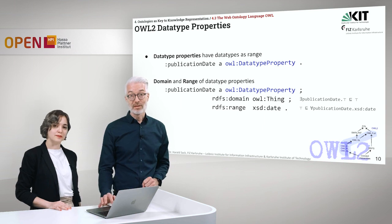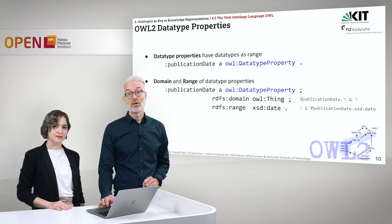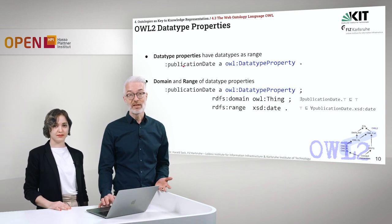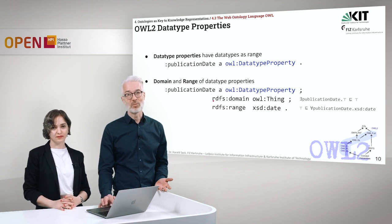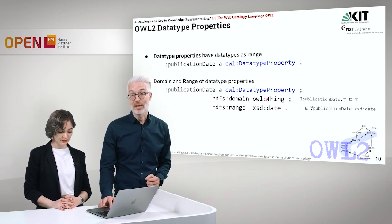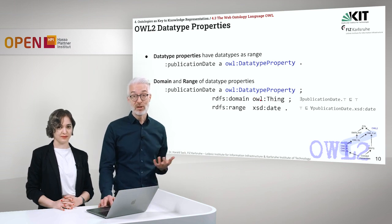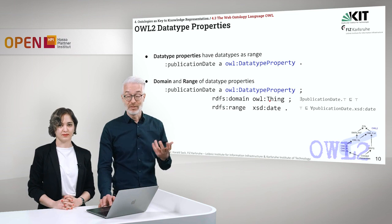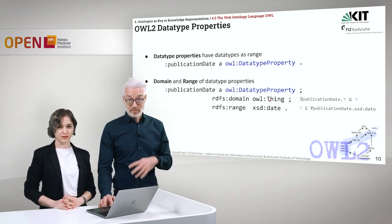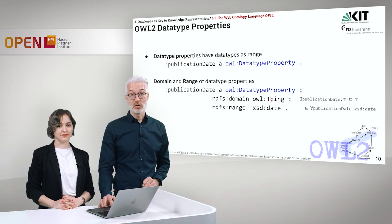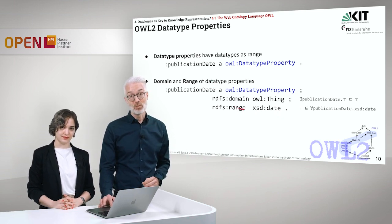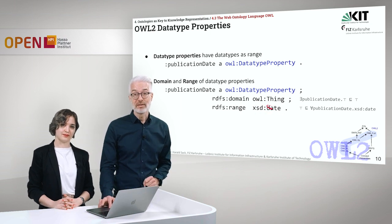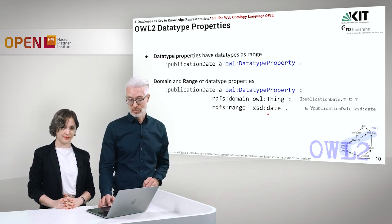For datatype properties, it's exactly the same structure. We use the keyword owl:DatatypeProperty — for example, defining 'publication date' as a datatype property. The domain is owl:Thing, meaning every individual is a member of that class, and the range is the data type xsd:date. You can identify datatype properties by their range: if the range is a data type, it is a datatype property.